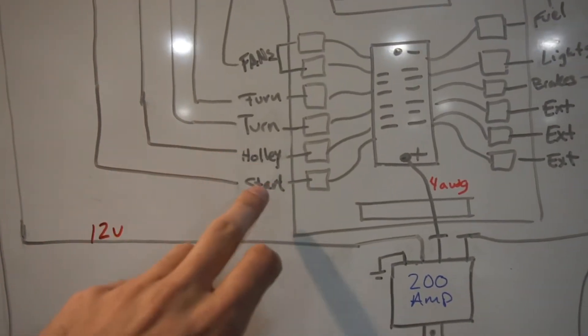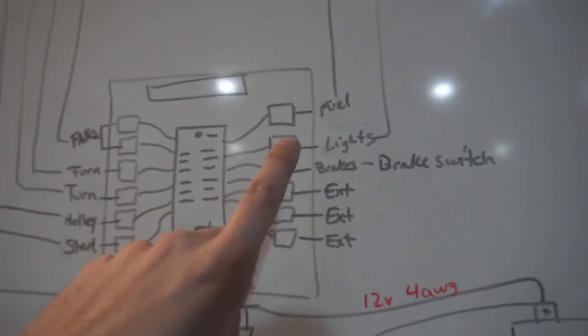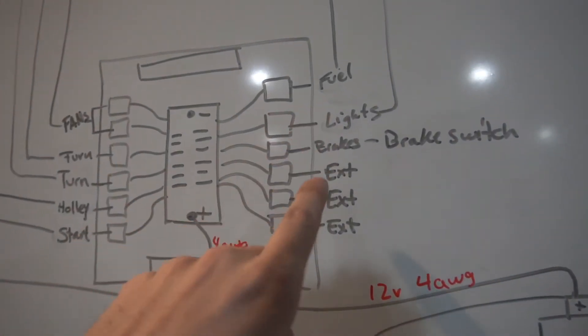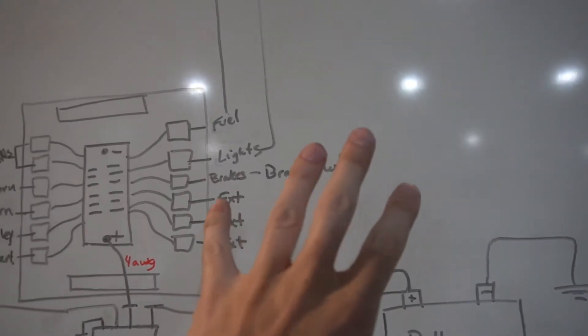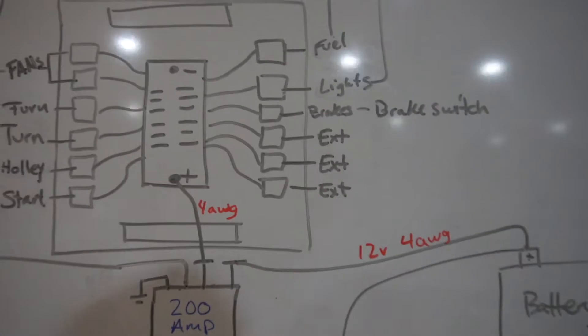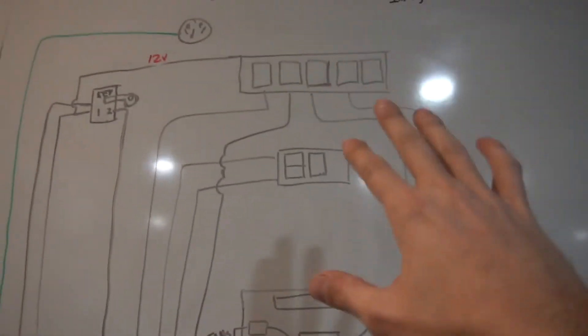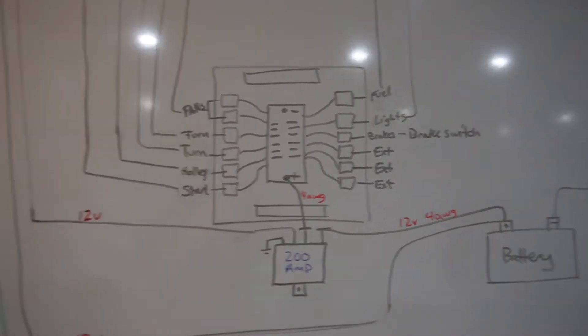Next we got the Holly, obviously, and then the starter is on the switch or on the key. We got fuel, lights, brakes. Brakes I don't have running up to the switch because that will run off of the brake pedal switch. Then I'll have three extras here which we're going to wire into the system so they're already up here ready to be used, but it won't have anything coming out of that side.